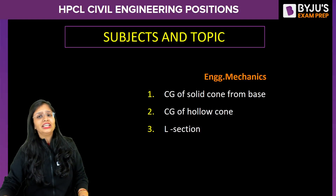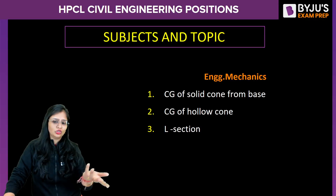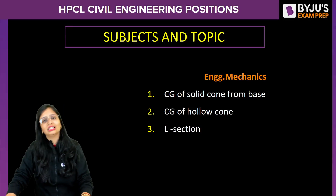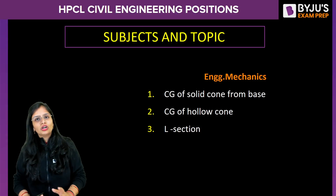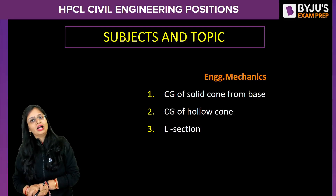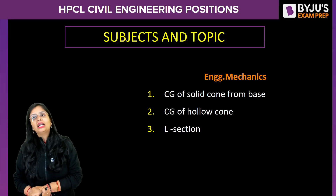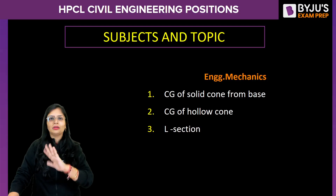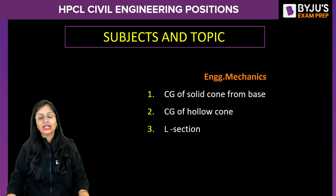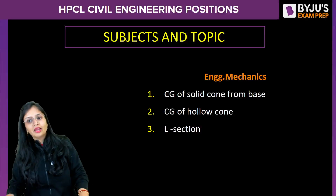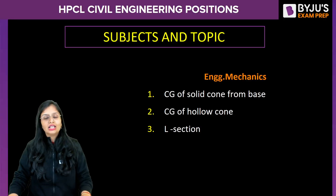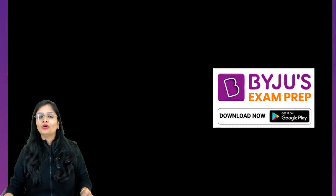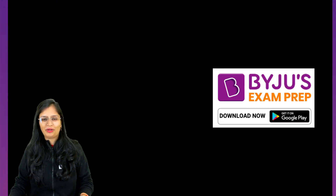In engineering mechanics, three questions were asked: one to calculate the CG of a solid cone, one to calculate the CG of a hollow cone, and one question from LCH. Overall, the 170-question paper with negative marking of 0.25 was easy to moderate based on student feedback — nowhere was the paper tough. We are expecting a decent cutoff on the higher side. Best of luck waiting for the results, and for more videos and sessions, do subscribe to Baiju's Exam Prep. Thank you everyone.